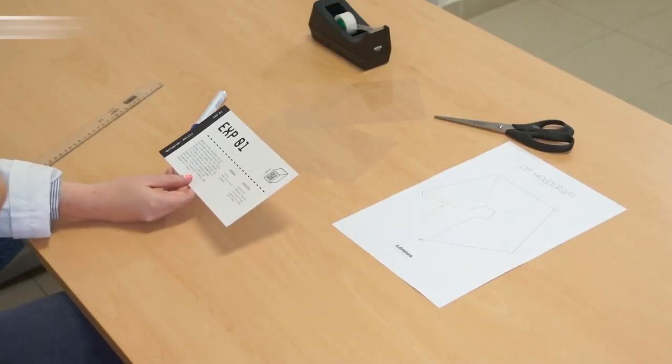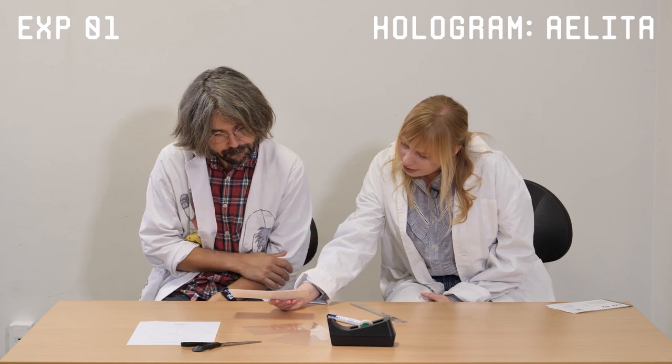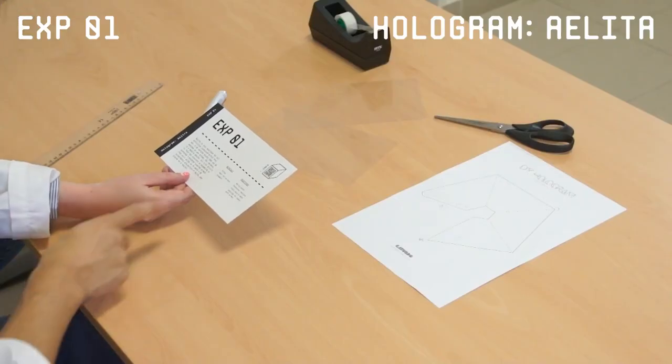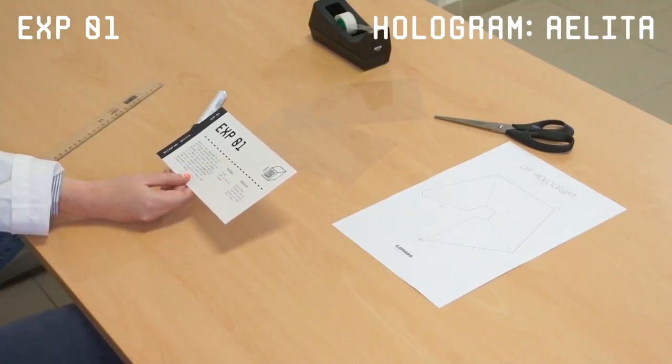So what do we have here? We have the first experiment here, and in this experiment sheet you can see there is also a QR code that you can use to get more info.